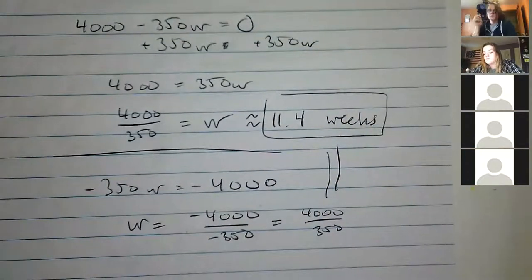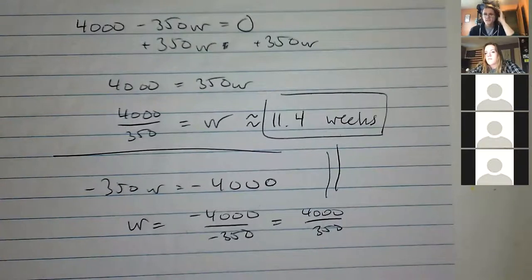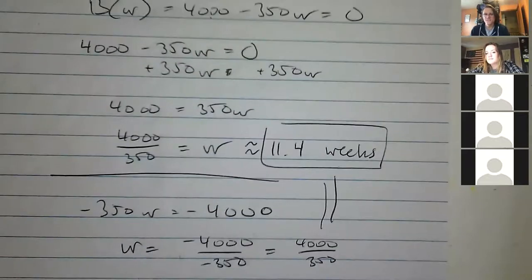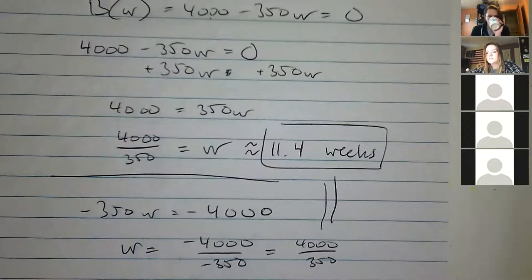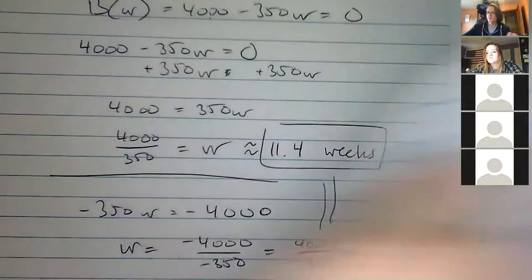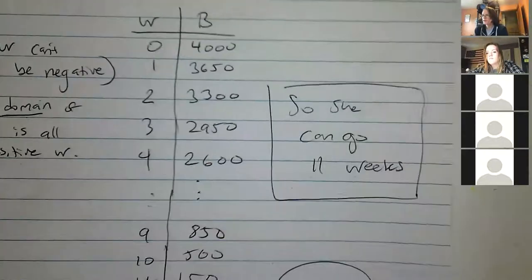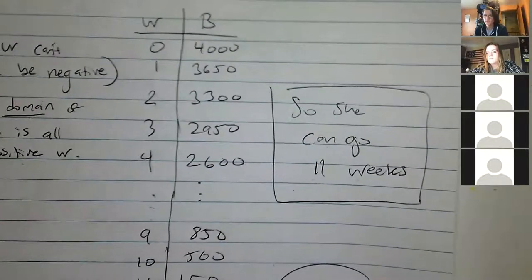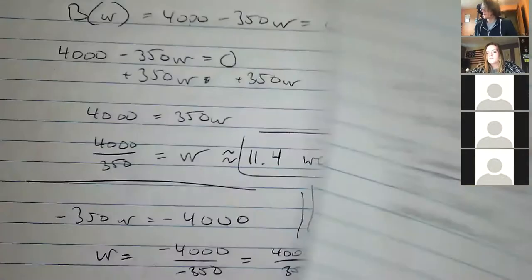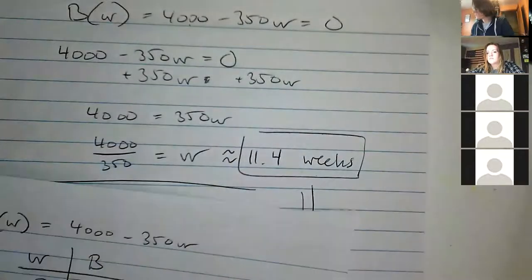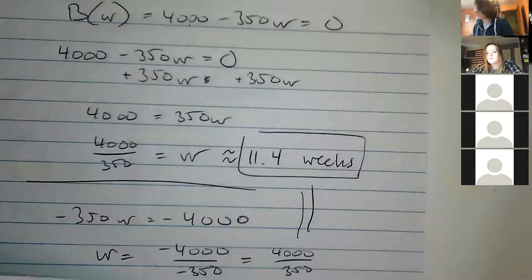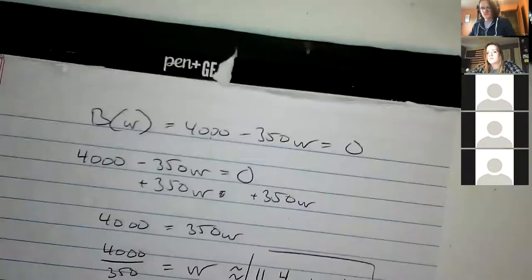When you're doing algebra, there's no single right way as long as you're moving things around and dividing correctly. So the algebraic method is faster; the table method also works; you could theoretically do a graph. Let's move on to the last example from the previous notes.